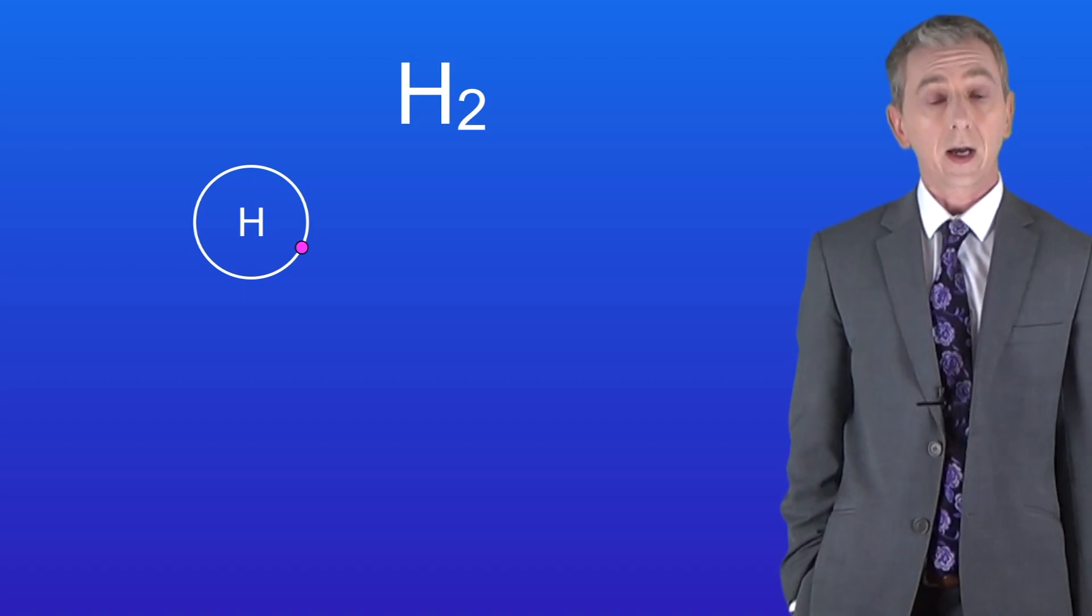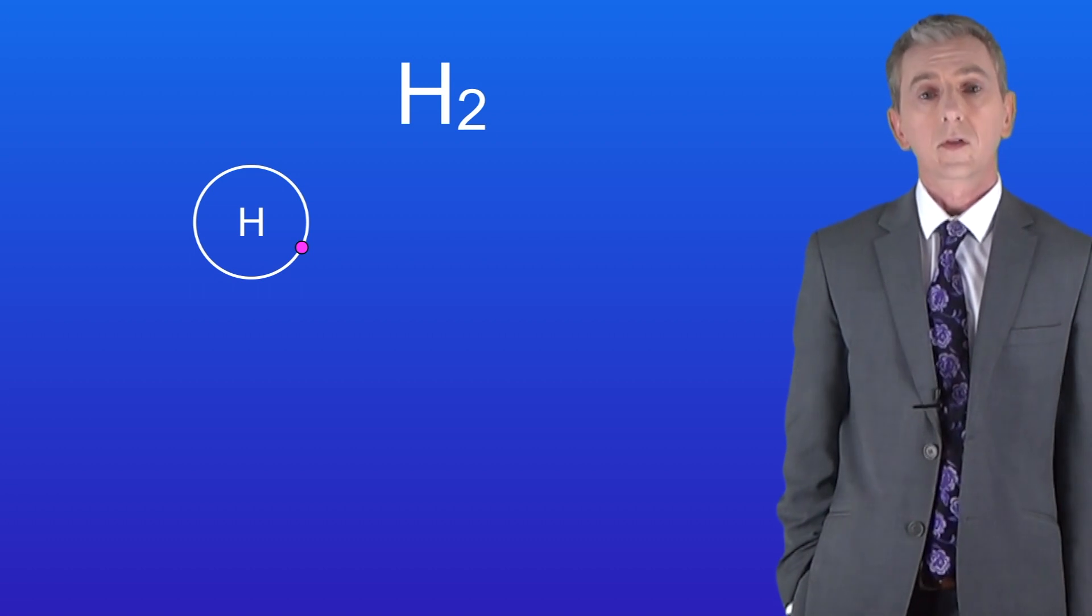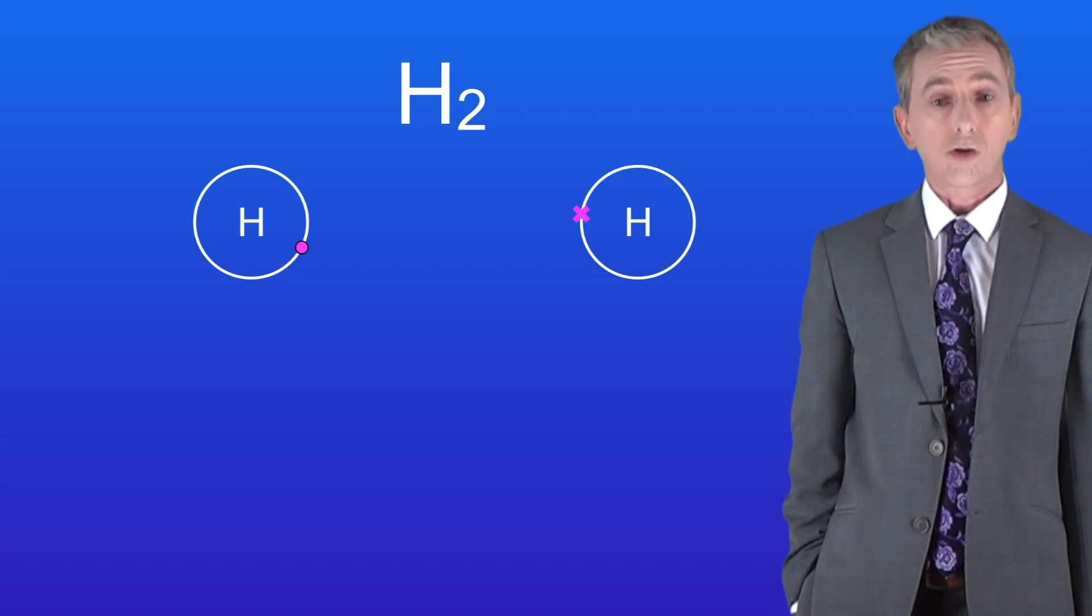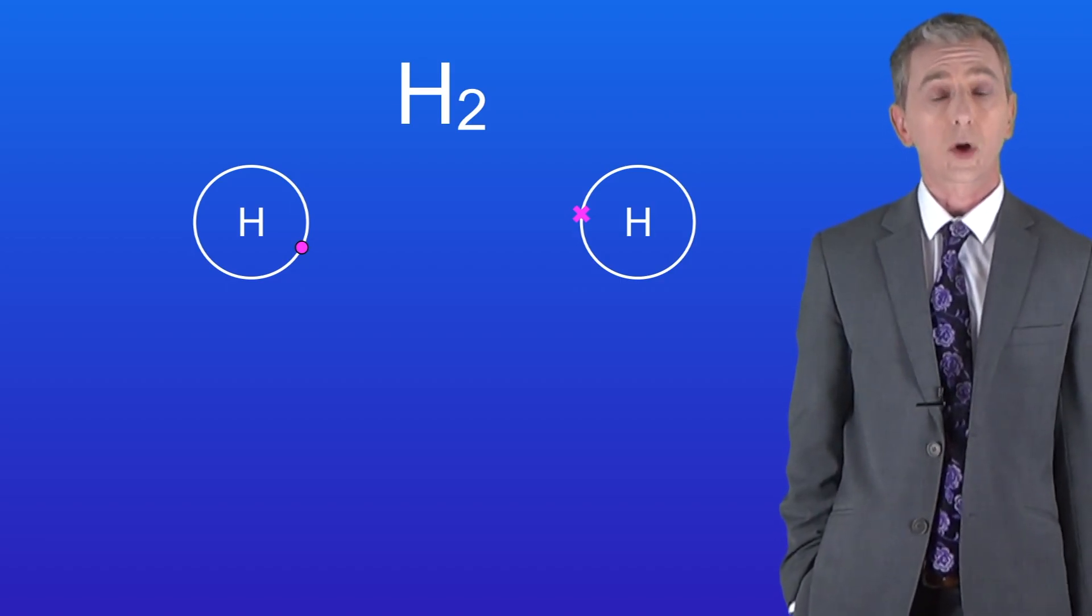In the case of a hydrogen molecule it achieves this by reacting with another hydrogen atom. So here it is. You can see that in this case I've drawn its electron as a cross rather than a dot. Don't be confused by this, they both show an electron.